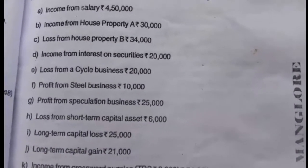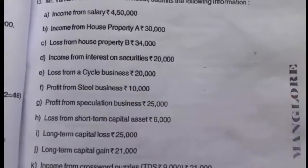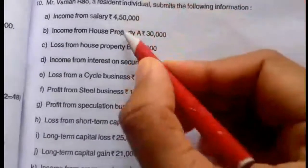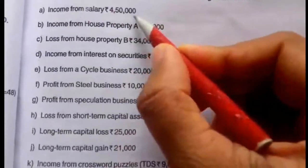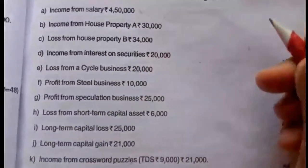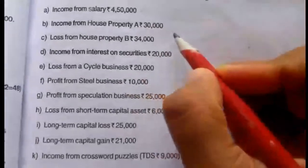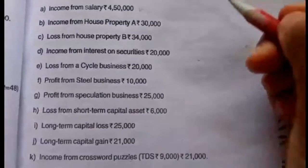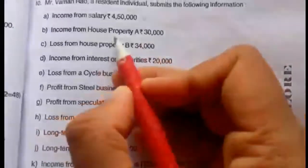To find out the gross total income, the first head is income from salary. In this question, they have given income from salary Rs. 4,50,000, so this Rs. 4,50,000 we have to take under the head income from salary. The second head is income from house property.